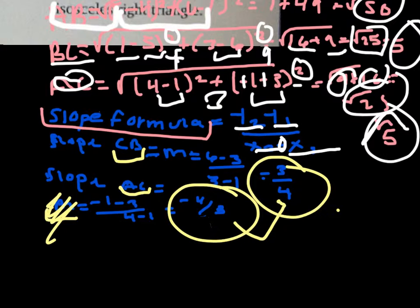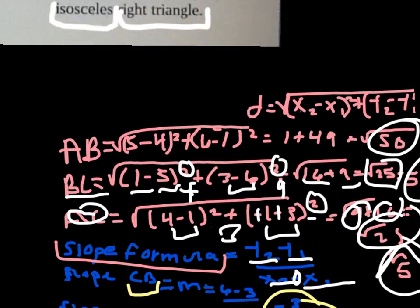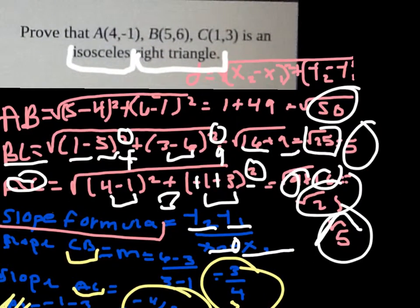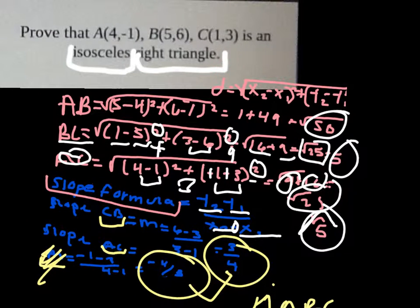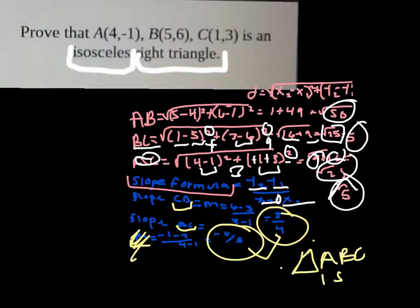This proves that triangle ABC is a right triangle. It's also isosceles because an isosceles triangle has two equal sides, and we got 5 for both BC and AC.